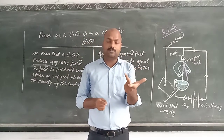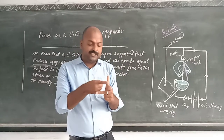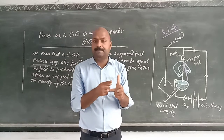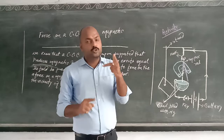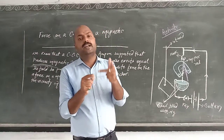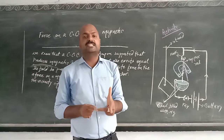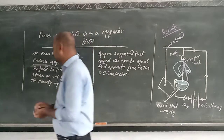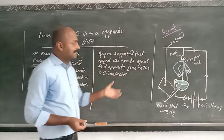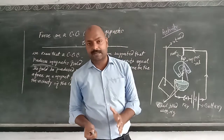Then the thumb shows the direction of motion of the conductor, or the direction of force experienced by the conductor. This is Fleming's Left Hand Rule: stretch the first three fingers of your left hand perpendicular to each other — the index finger shows the direction of magnetic field, the middle finger shows the direction of current, and the thumb shows the direction of force experienced by the conductor.